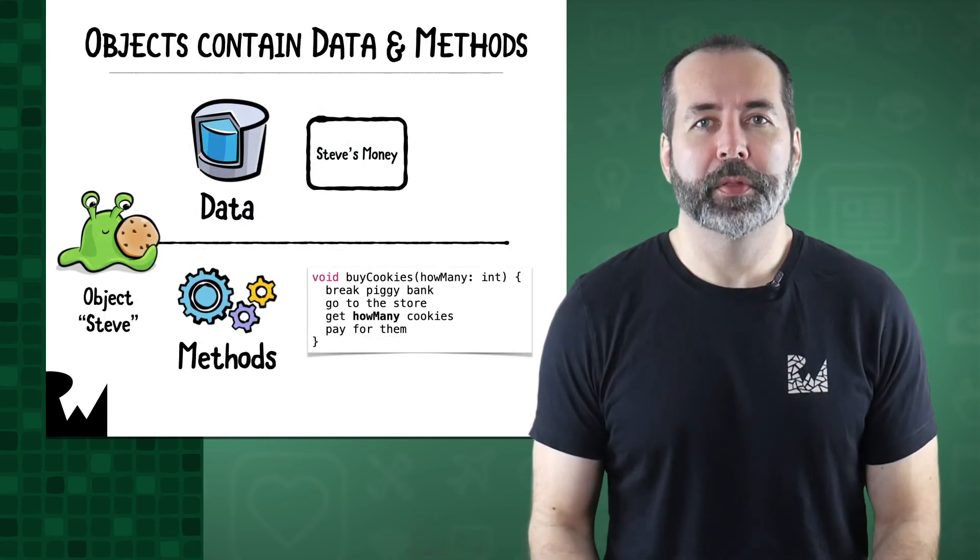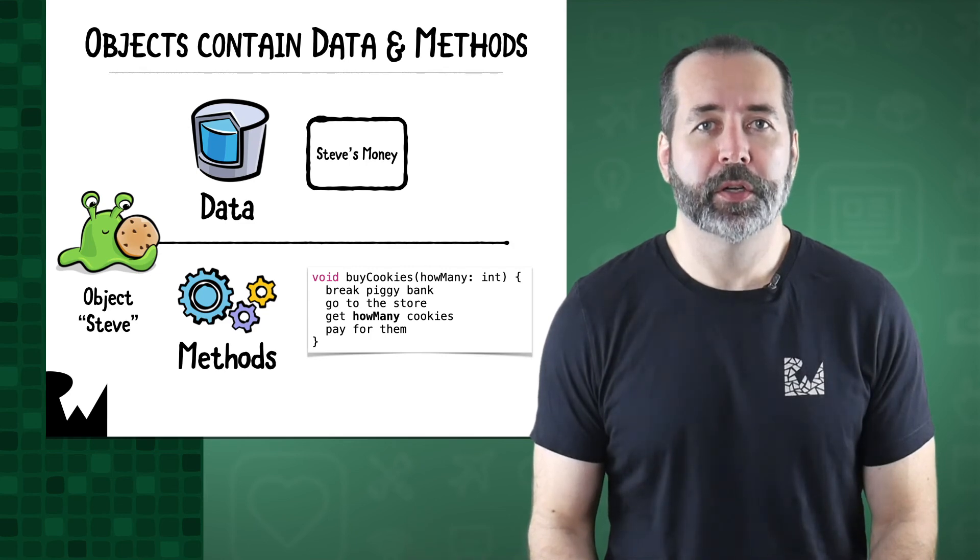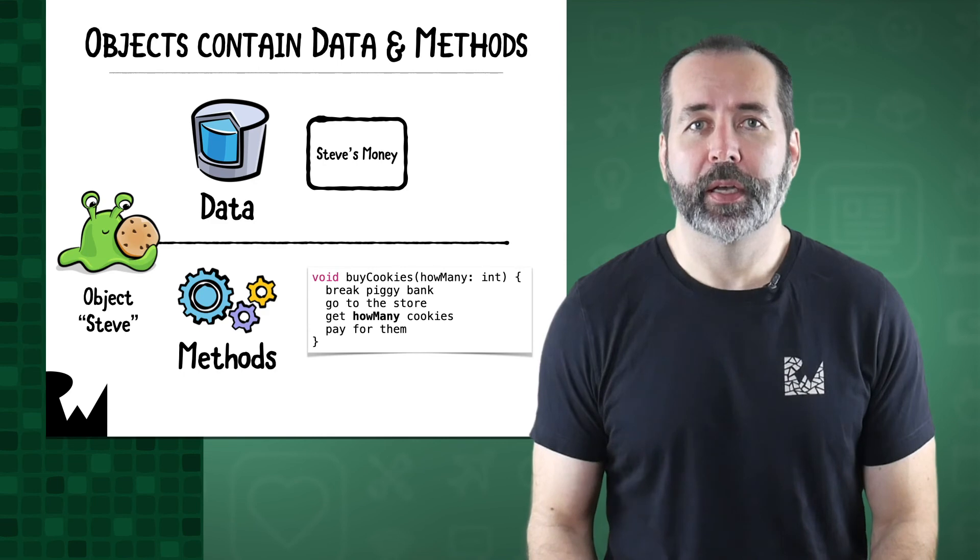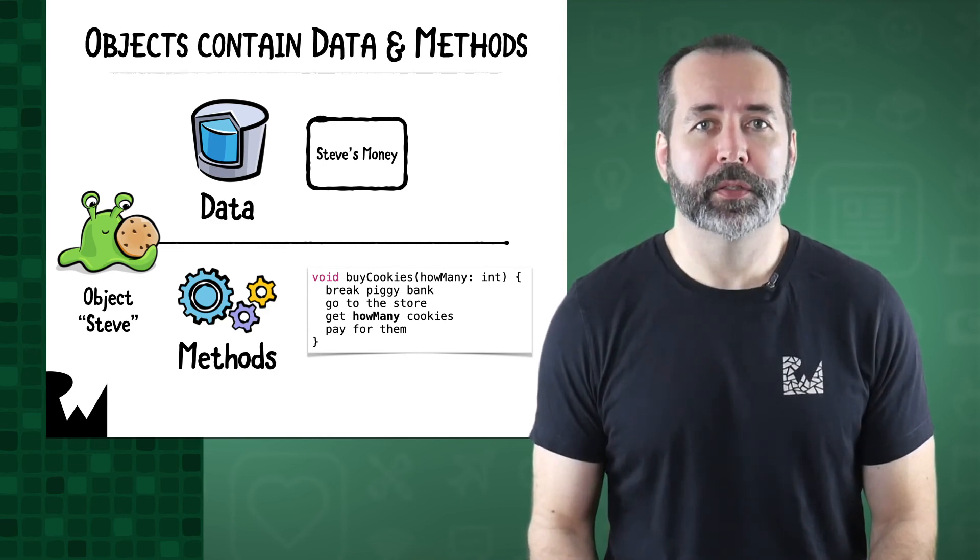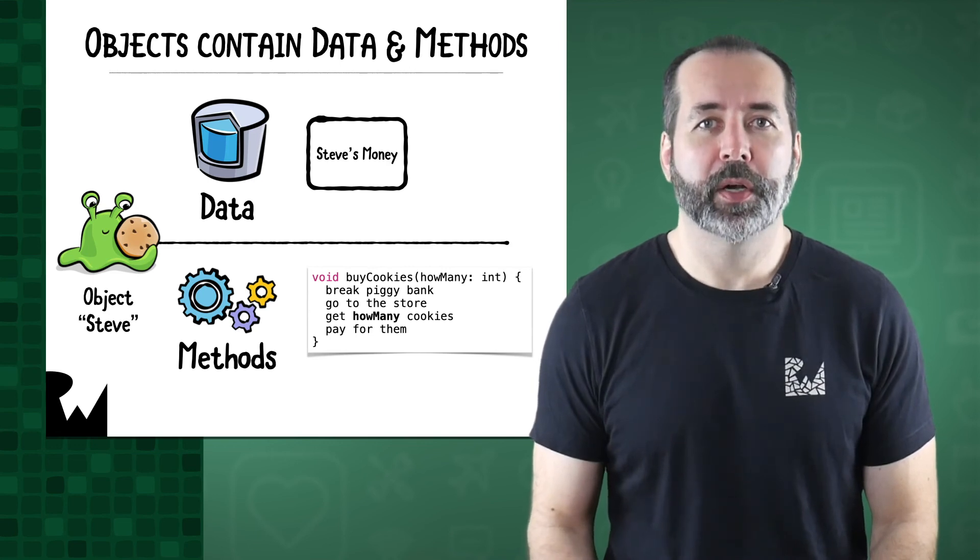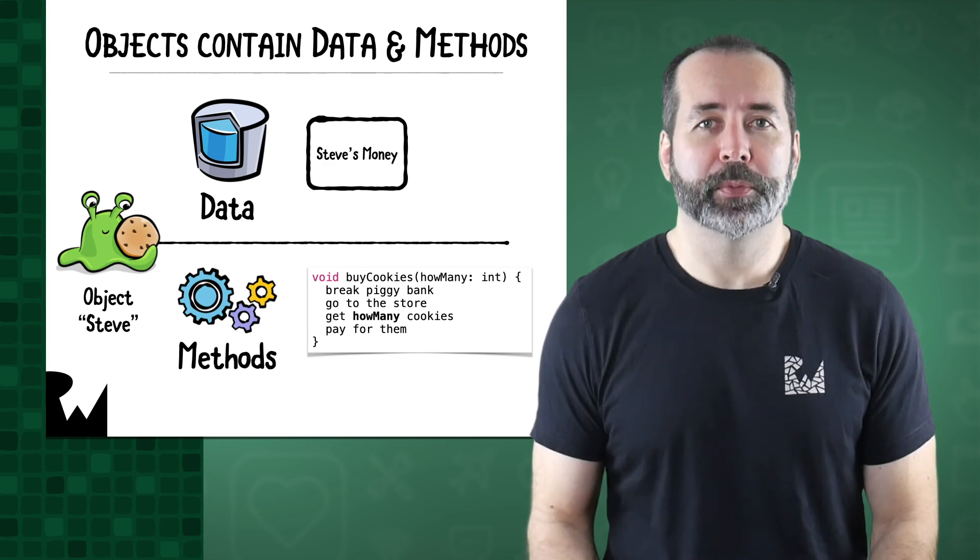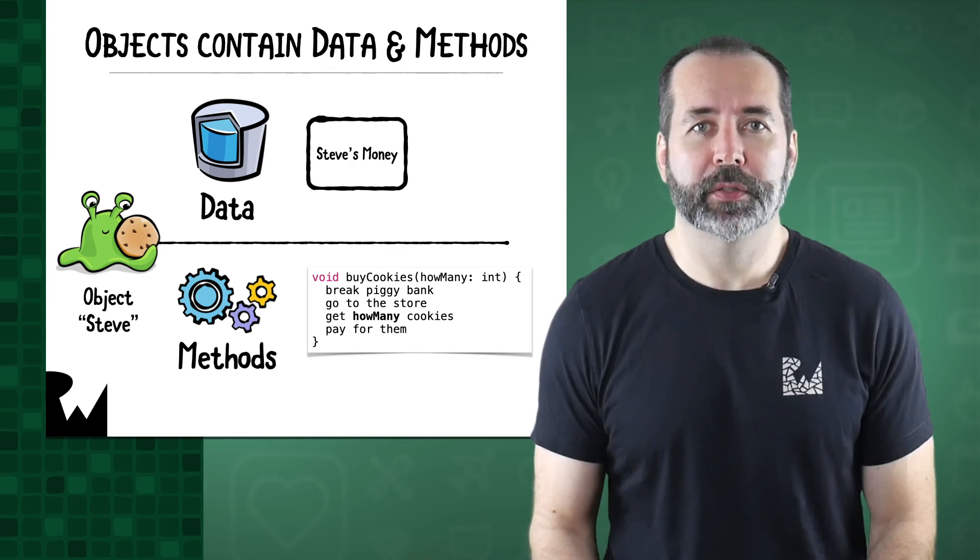The most important thing to remember from this lecture is that objects contain two things. First, data, like the money to buy cookies with. And second, methods, like the steps involved in buying cookies. Objects can look at each other's data, well, to some extent at least. After all, Steve may not approve if you peek inside his wallet. Asking objects to perform their methods is how you get your app to do things.